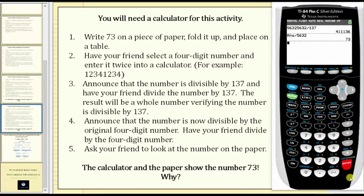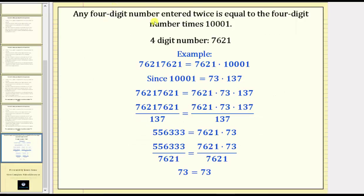The real question is, why does this work? Any four-digit number entered twice is equal to the four-digit number times 10001. So for example, if we begin with the four-digit number 7621 and enter the digits twice, we have 76217621, which is equal to 7621 times 10001.